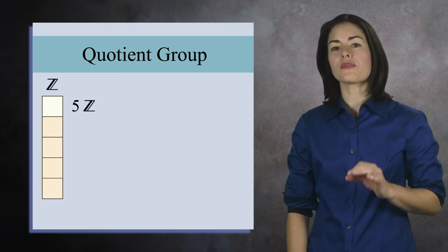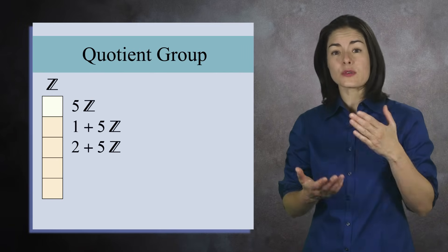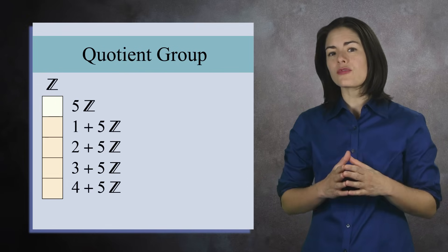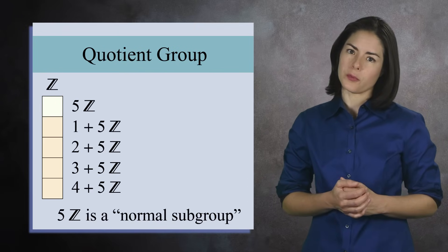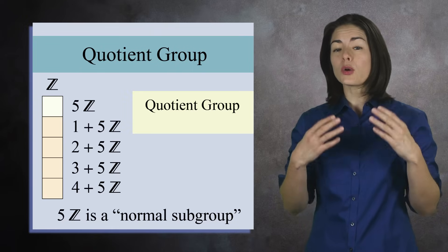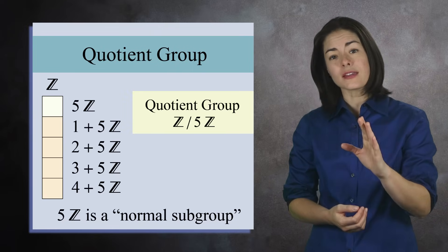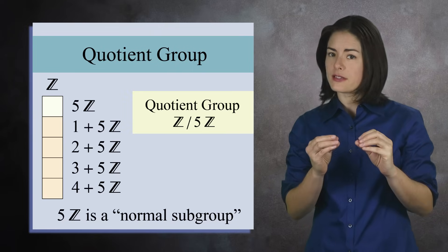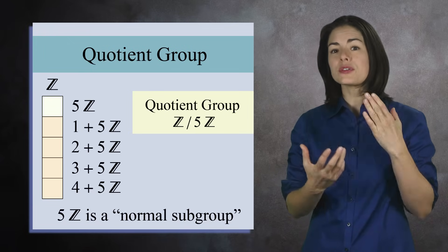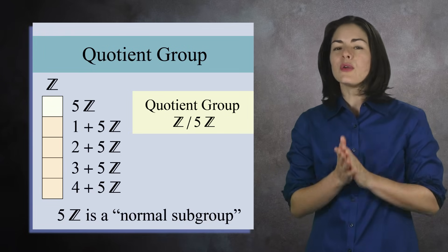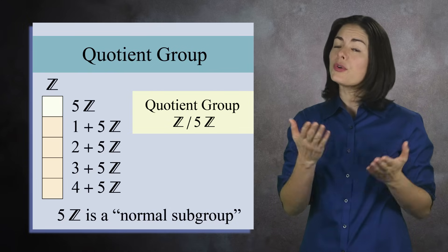We use the subgroup 5Z to partition the group Z into cosets. Because the cosets form a group, we call 5Z a normal subgroup. And the group of cosets is called a quotient group, and it's written like this. This name is very descriptive, since we are using a subgroup to divide the group into cosets. And when you divide one thing by another, you get a quotient.